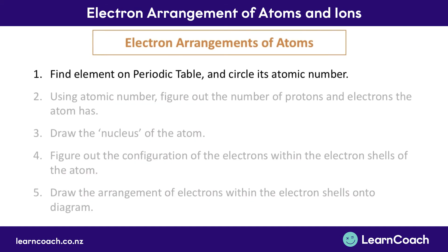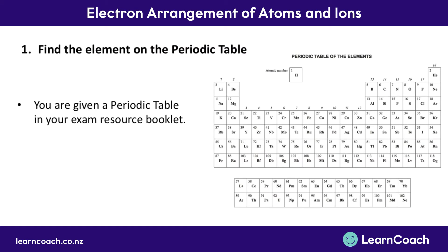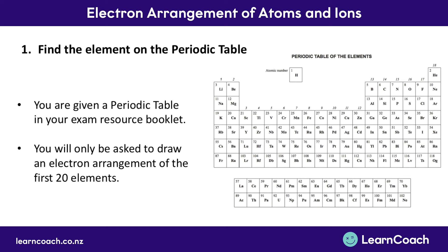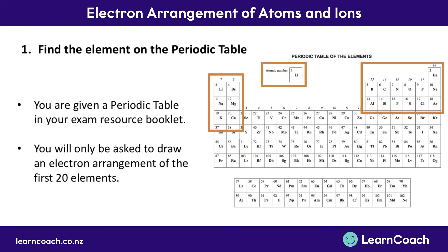Looking at step one, you need to find the element — in this case sodium — on the periodic table and circle its atomic number. As you know, you are given a periodic table in your exam resource booklet. In your end of year exams, you are only ever going to be asked to draw an electron arrangement of one of the first 20 elements, from hydrogen all the way through to calcium. The element we're drawing an electron arrangement for is sodium, which we can see is located here on our periodic table.